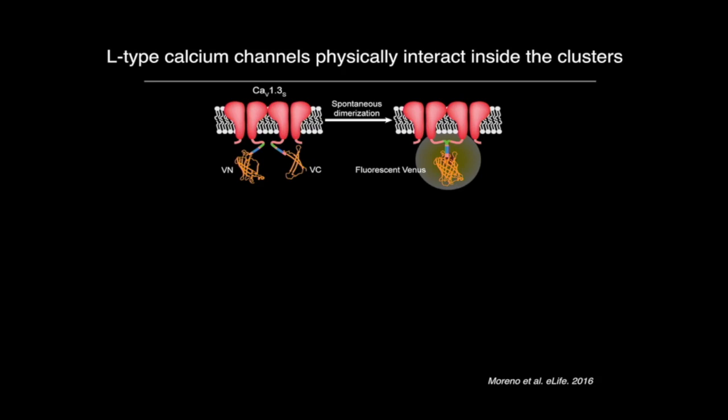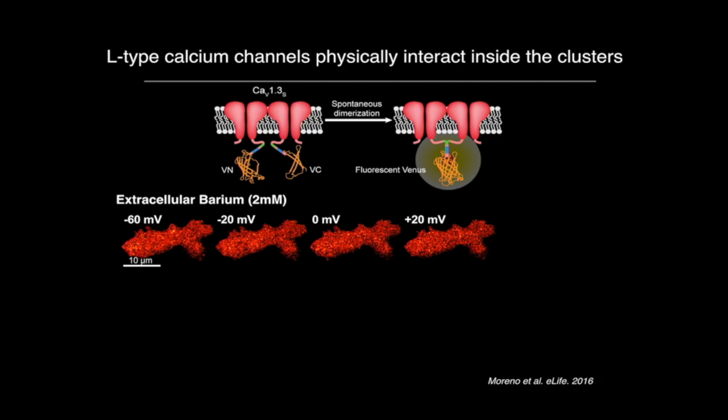We are looking at the footprint of a cell transfected with these constructs by total internal reflection microscopy — seeing just very close to the plasma membrane. We open the channels with voltage steps to see if opening the channels makes them interact. In the first condition tested, using barium in the extracellular solution, which these channels are permeable to, we didn't see any increase in interaction — the fluorescence looked almost the same.